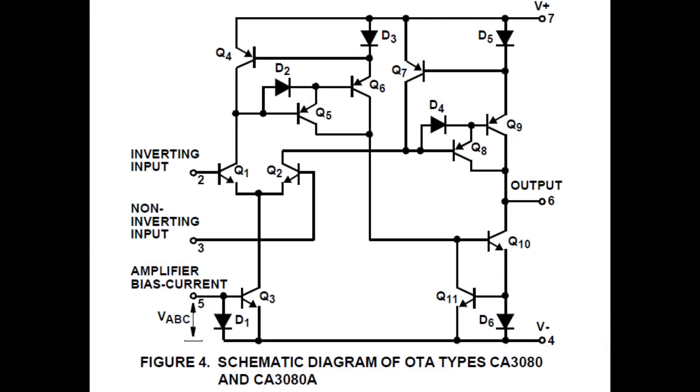So if we take a look at the simplified schematic for the part, you can see at the lower left there the amplifier bias current. You can change the current through the long tail pair, the differential amplifier at the front of an op amp. That's pretty cool. You could change the current there, so what would that do to the output?